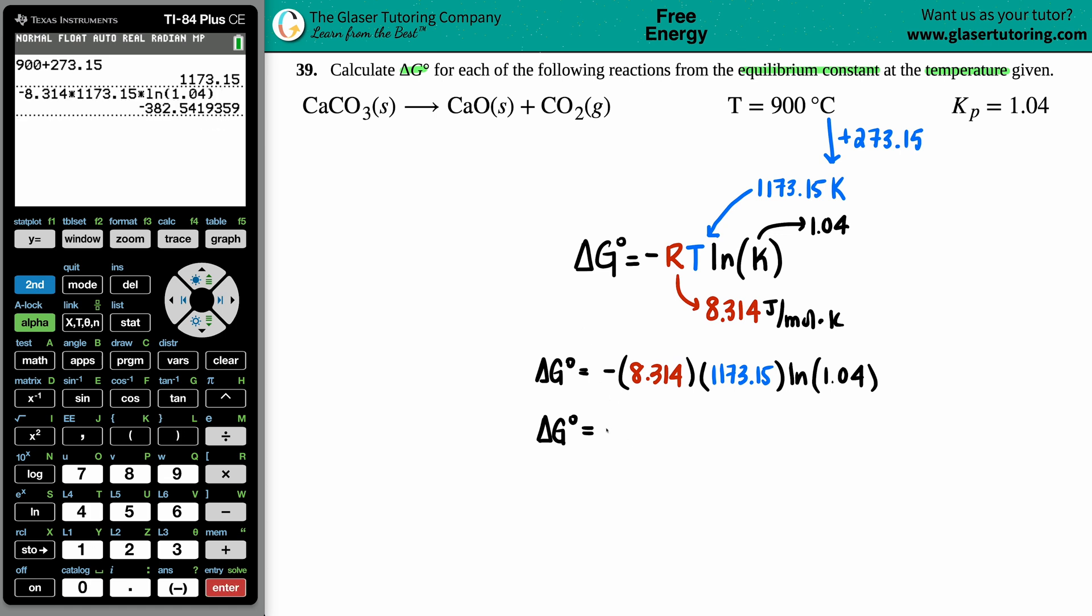Easy as pi, right? Negative 382, maybe we'll say 382.5. And just know that, remember going back to the R value, these units were not canceled. The kelvin was canceled, so this stays joule per mole.